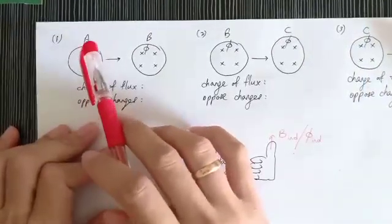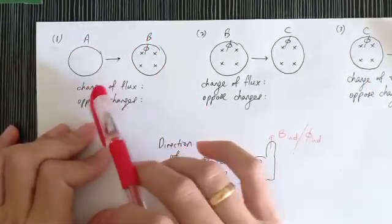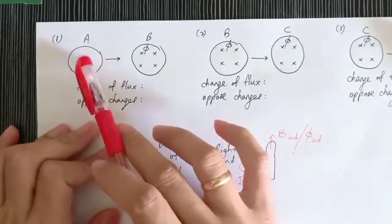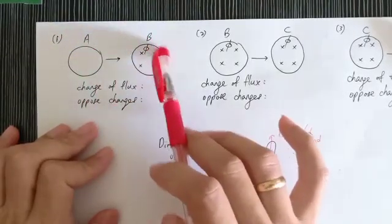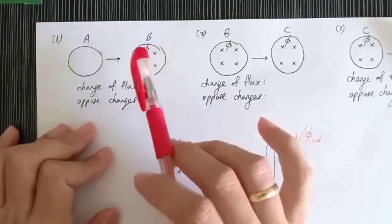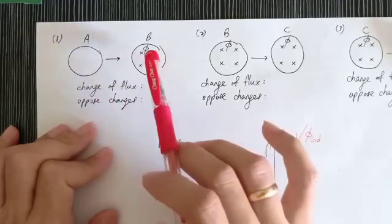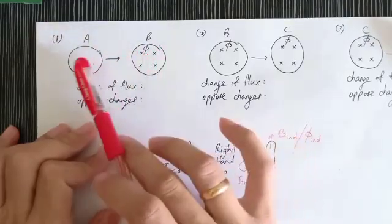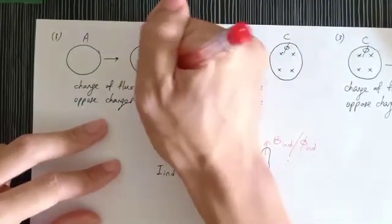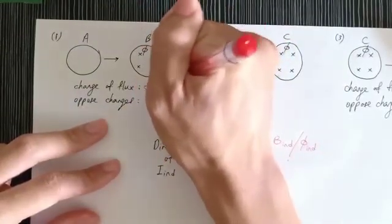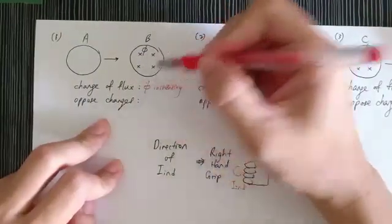For the first condition, from A to B: as you can see, A has no flux, and entering B it has full flux. So the change of flux here is that the flux is increasing — the original flux is increasing.